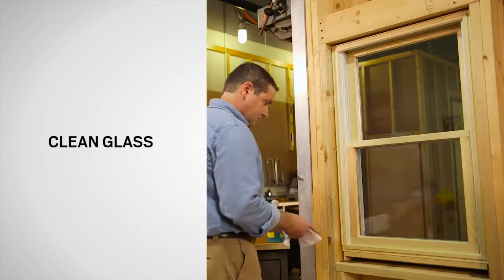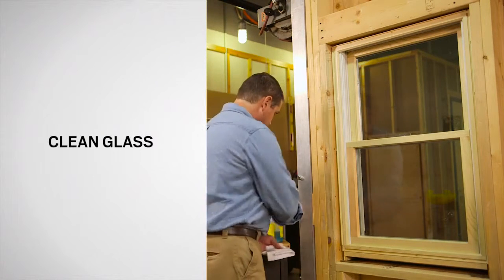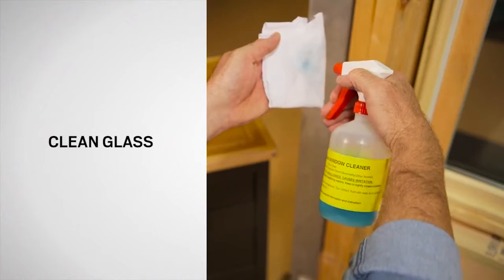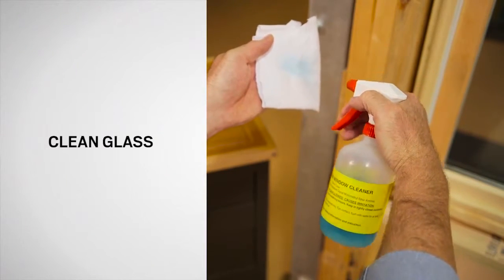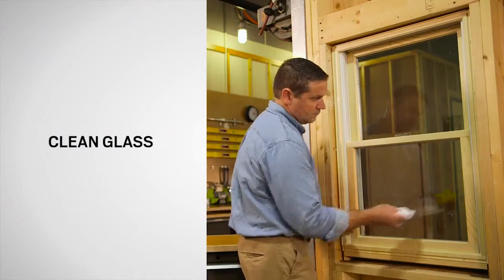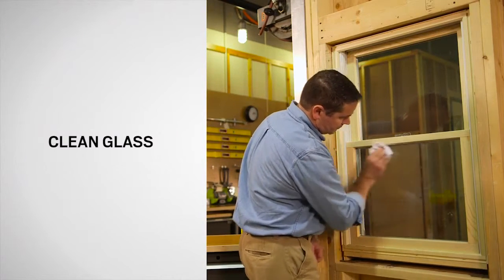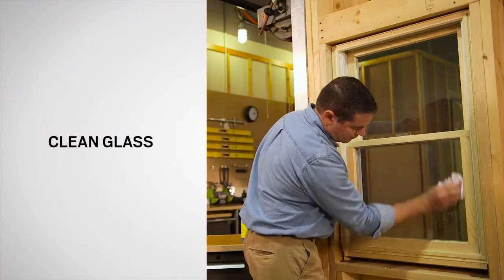When cleaning your glass, use an over-the-counter liquid glass cleaner. You can also use a mixture of water and either ammonia or a mild detergent. Apply the solution and use a soft cloth to clean the glass surface.